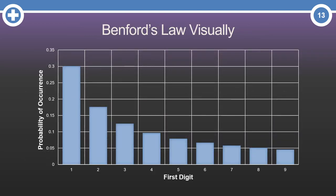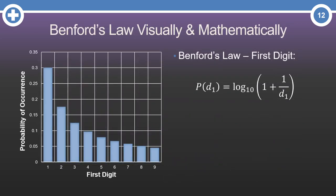Here is a visual representation of Benford's Law — a distribution of first digits. Notice how the 1 has the highest probability, followed by 2, and it decreases from there all the way down to 9. Here is the actual mathematical view of the law: the probability of any first digit is log base 10 of 1 plus 1 over the digit itself. So the probability of the first digit being a 2 would be log base 10 of 1 plus 1 over 2.